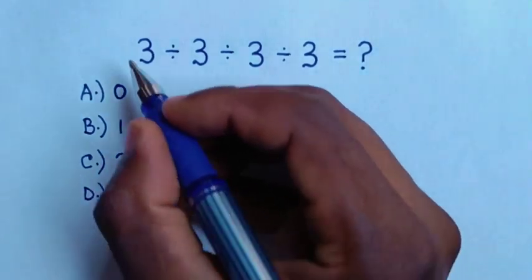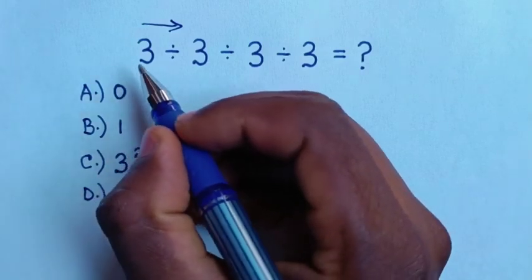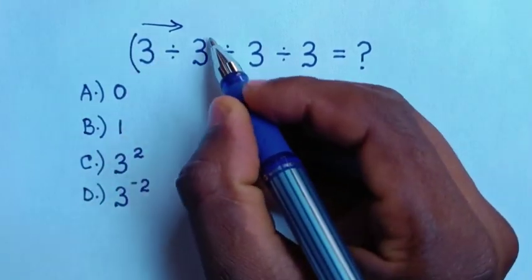From this problem, we'll start working from left to right by dealing with this first division of 3 divided by 3.